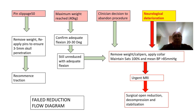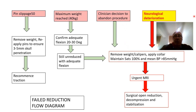The failed reduction algorithm: for pin slippage, remove weight, reapply pins ensuring penetration of the outer table of the skull, and recommence traction. If you achieve 40 kg maximum weight, confirm you have adequate flexion; if the patient is still unreduced, remove weights and consider abandoning the procedure. Most importantly, if the patient has neurological deterioration, abandon the procedure, remove weight, apply the collar, maintain cord perfusion with mean blood pressure over 85 mmHg, maintain saturation with oxygen, send for urgent MRI, and the patient will need surgical open reduction.